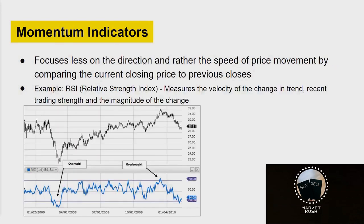Momentum indicators tend to focus less on the direction and more on the speed of the price movement, usually by comparing current closing prices to previous closing prices. A very common example is the RSI, or Relative Strength Index, which measures the velocity of the change in trend, recent trading strength, and the magnitude of the change.